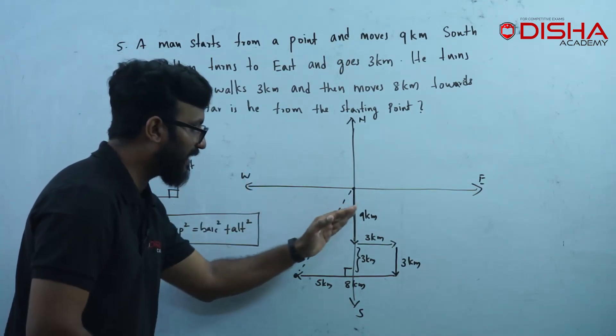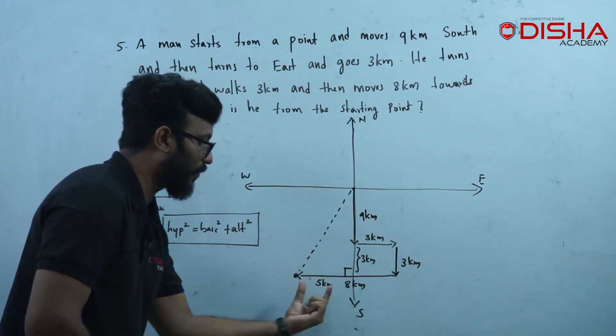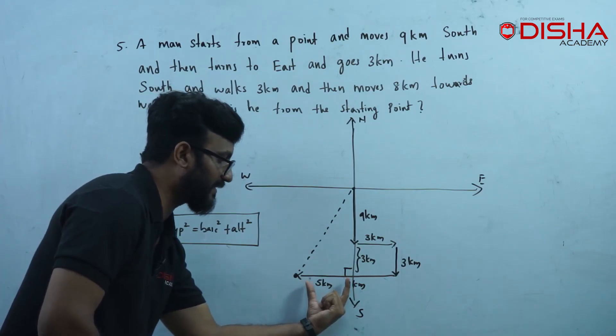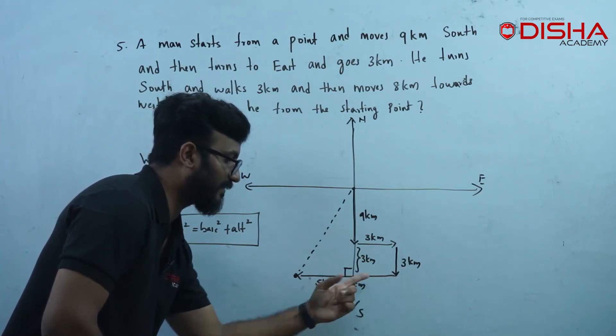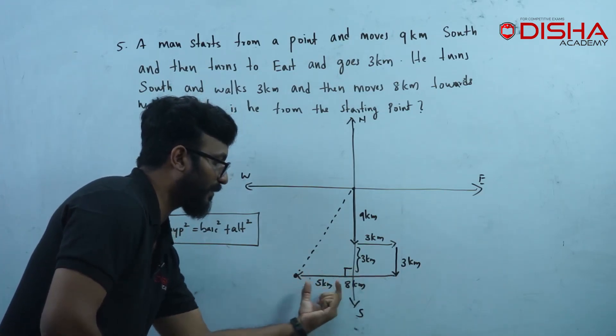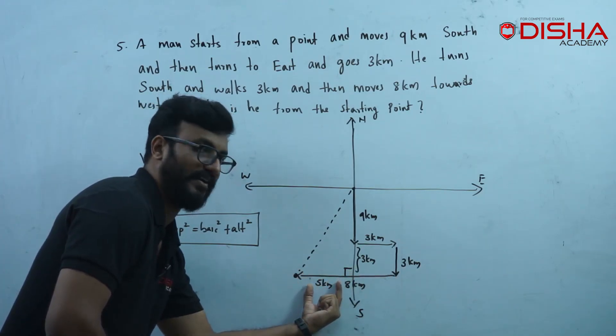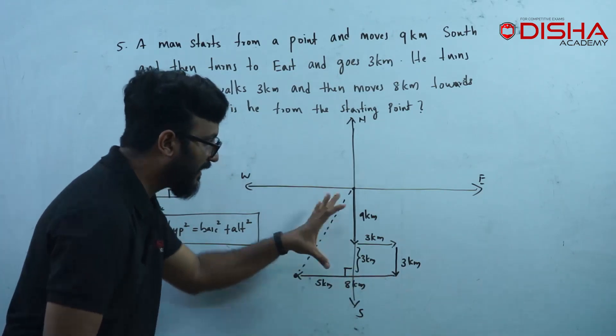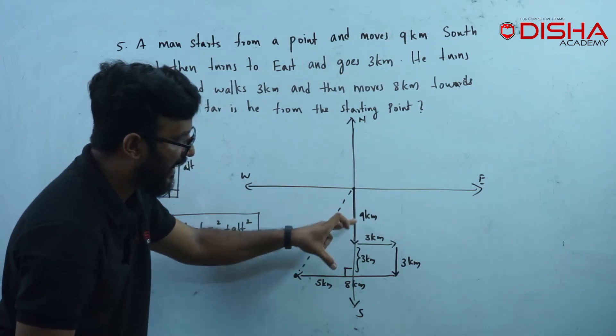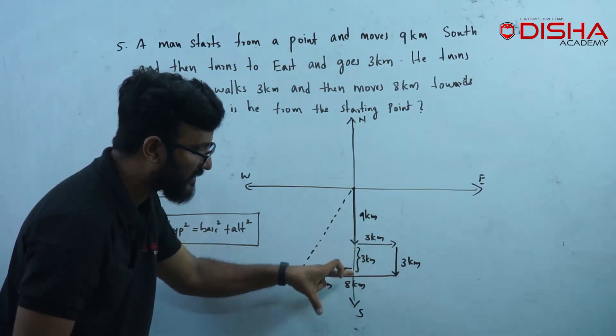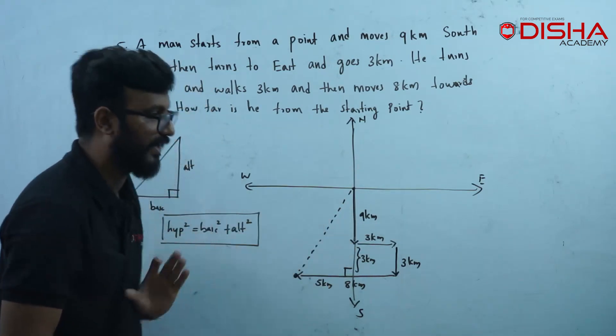We don't have hypotenuse — we have two sides. The base is 5 km. Then the height is 9 km plus 3, which equals 12.